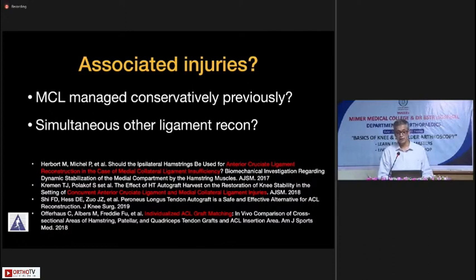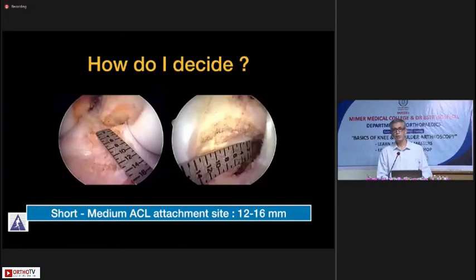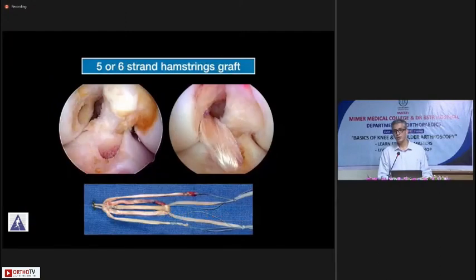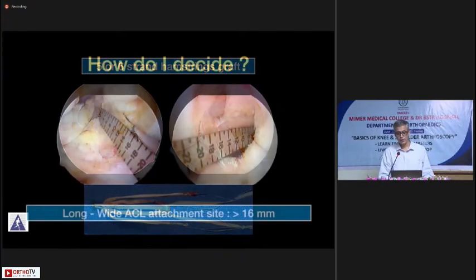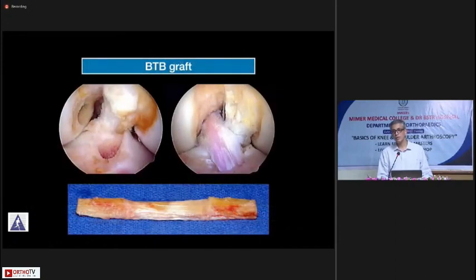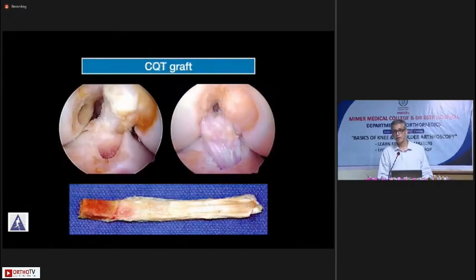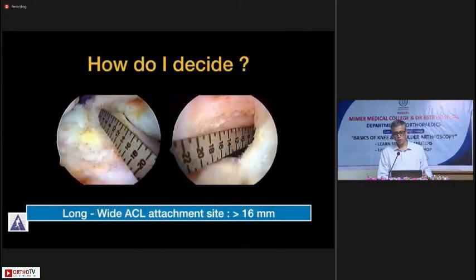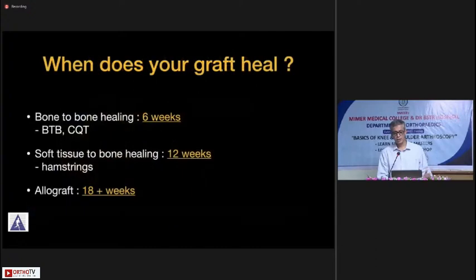For graft selection, I decide by measuring the footprint of the patient's native ACL. If the native footprint is less than 16mm, I prefer a hamstrings graft — either a 5 or 6 strand. We measured today's patient's footprint at around 16mm, so the plan is a 5-strand hamstring for today's live demo. If the footprint is greater than 16mm, I'm better off using a BTB graft or quad tendon graft to cover the larger footprint area.